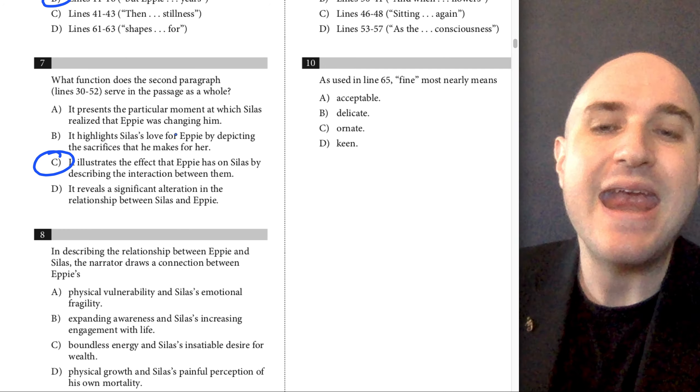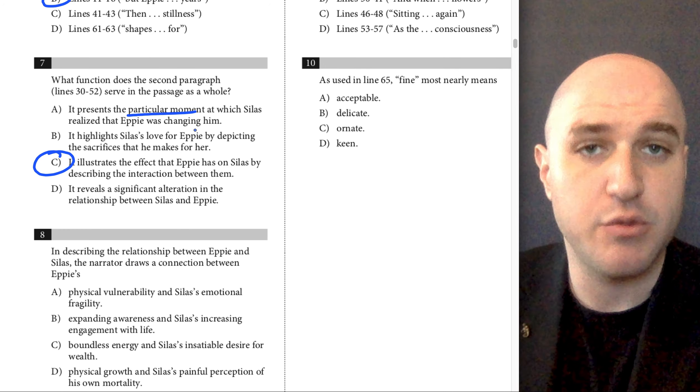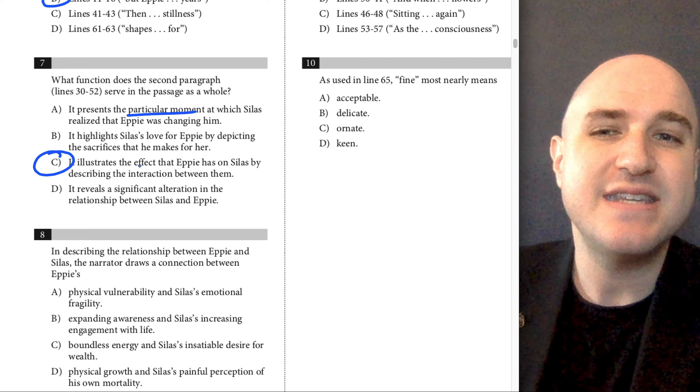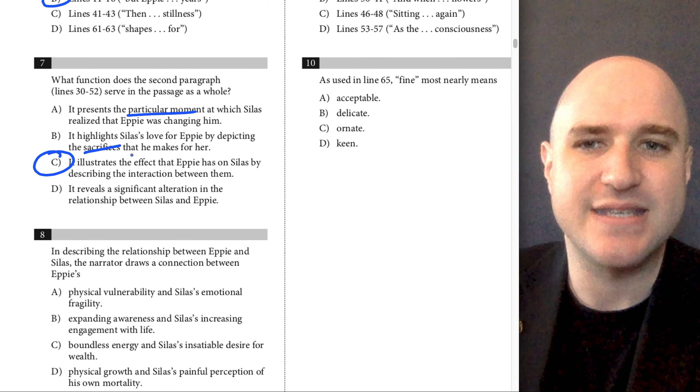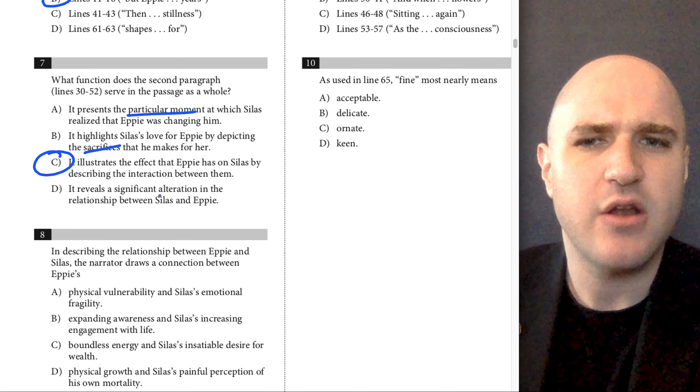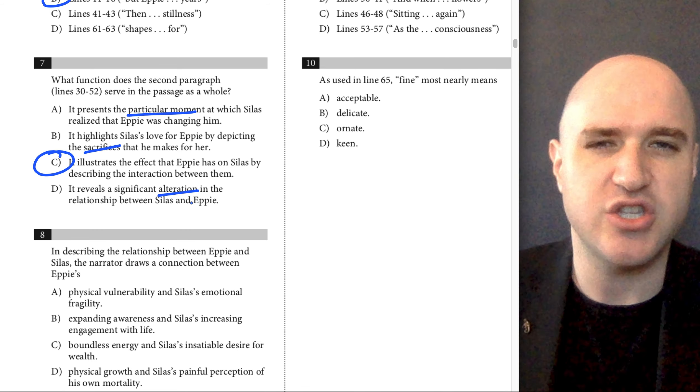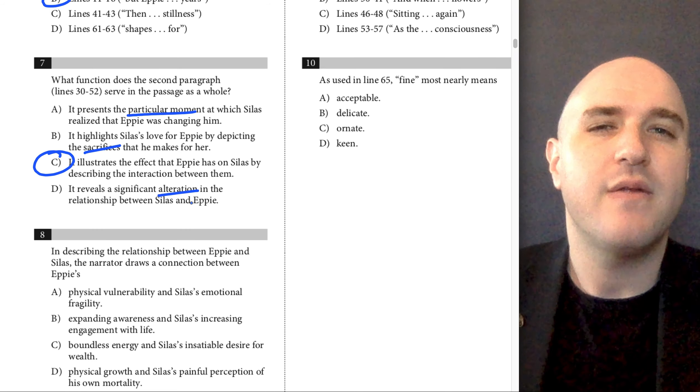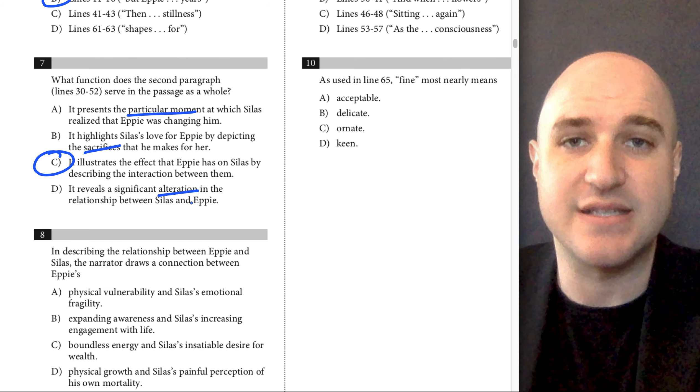I know that A is wrong because it's not about a particular moment, right? It's sort of a general thing. It does not talk about any sacrifices that Silas makes for Epi, and it doesn't reveal any sort of a significant alteration, right? There isn't a big change there in their relationship. There's a change in how Silas is feeling.